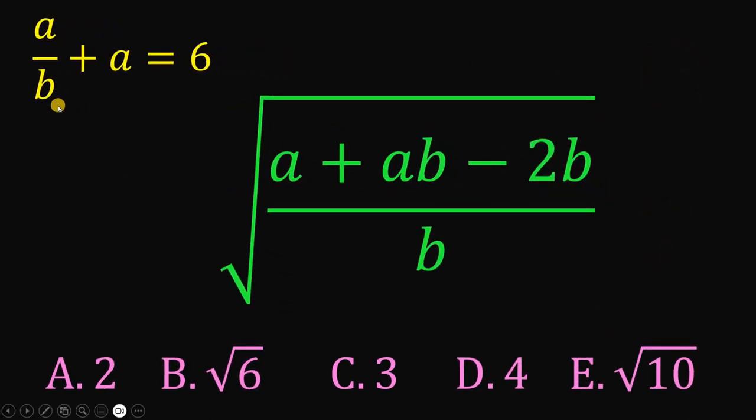Alright. So, if a over b plus a equals 6, then what is the value of this expression square root of a plus ab minus 2b all over b? And we have a lot of options.